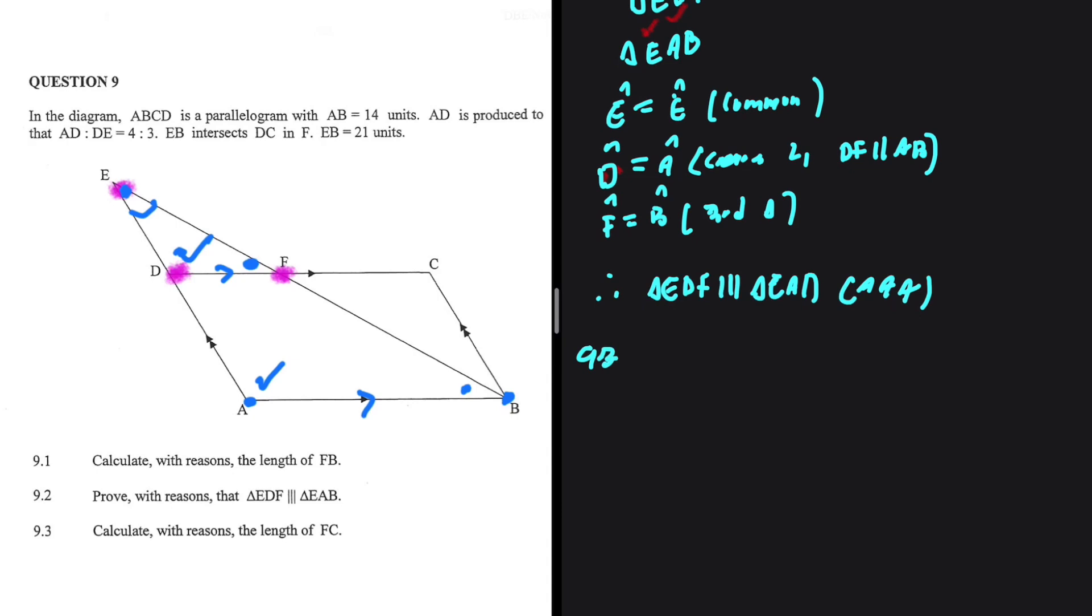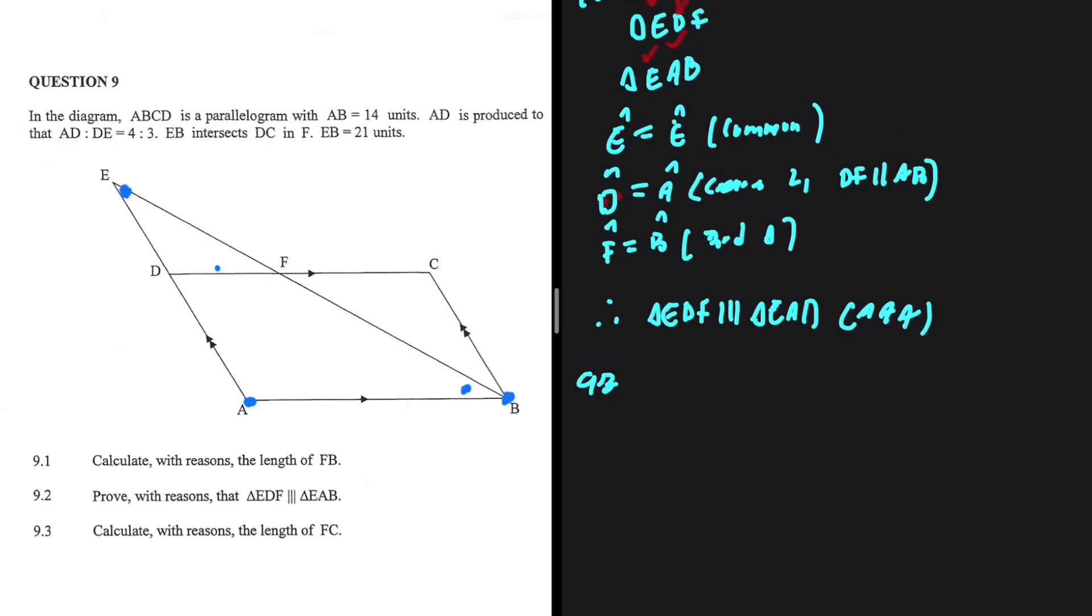9.3. Calculate with reasons the length of FC. So let me just go ahead and erase this. I want to find the length of FC. FC has nothing to do with our triangle, with our two triangles, right? But DF has something to do with our triangles.